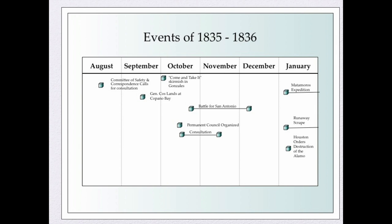Between October and December of that year, there was the battle for San Antonio — an attempt by Texians to gain control of San Antonio, which had long been the seat of colonial authority, away from the Mexican government. A permanent council was organized, and at the same time the Consultation began moving steps forward, closer and closer to open rebellion.